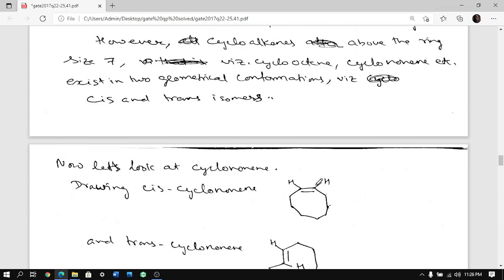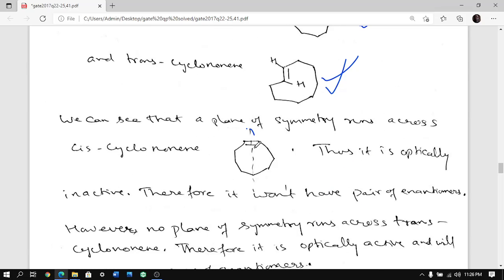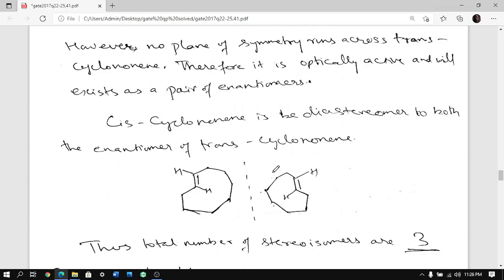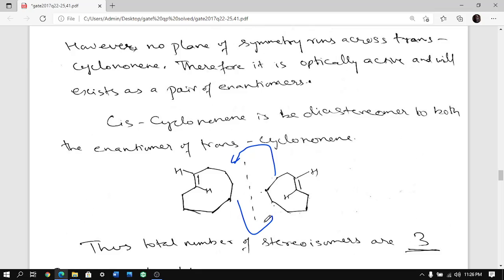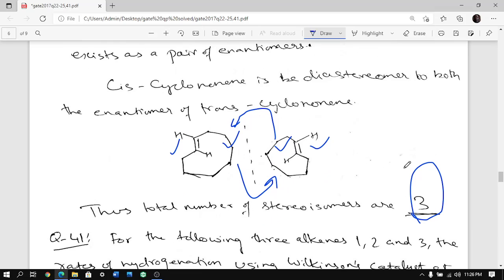But after seven member ring it can be trans also. So this is the cis and this is the trans. Now what happens when it is cis you can very clearly see there is a plane of symmetry. So optically not active. Whereas when it is trans it does not have plane of symmetry. So if you draw the mirror image you can see that these two are not superimposable. Therefore the number of isomers possible are three.